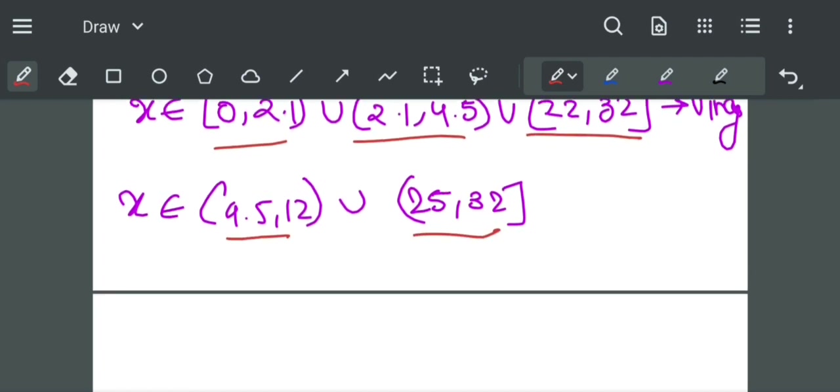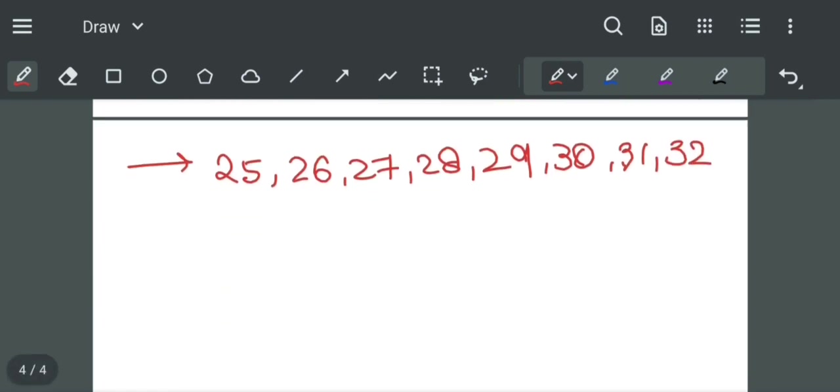We can see that there are no common points in these three ranges, so the only common points are from these two ranges, which are 25, 26, 27, 28, 29, 30, 31, and 32.